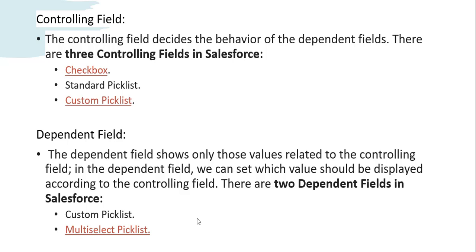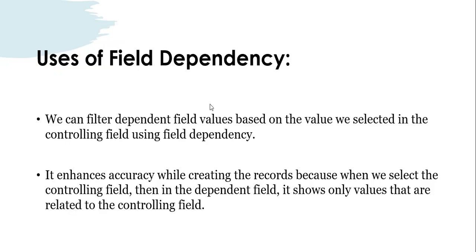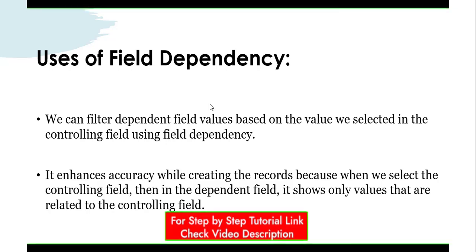Using field dependency, we can filter dependent field values based on the value selected in the controlling field. It enhances accuracy while creating records because the dependent field only shows values related to the controlling field, so we will not be confused about which value to select.